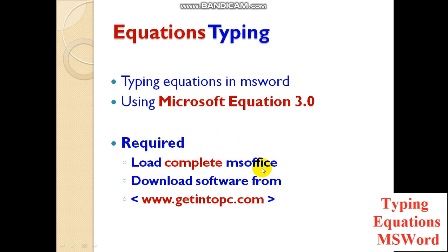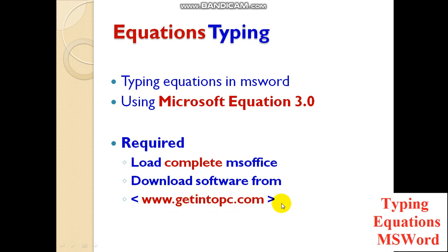If you don't find Microsoft Equation 3.0 on your system, you can download MS Office from this website. This website provides the full version of MS Office, and not only MS Office — all types of software can be downloaded from this website. That website is getintopc.com. If you still can't find it, you can call me or email me.